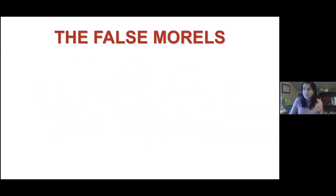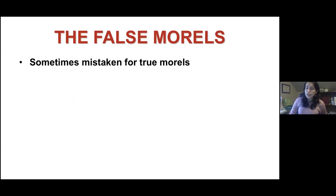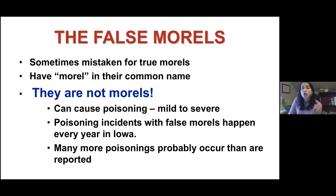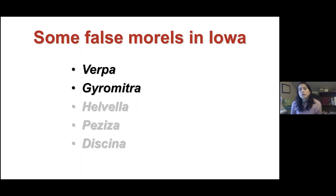Now we move into learning about false morels. Unfortunately, false morels are sometimes mistaken for true morels — their nicknames are very similar, but they are not morels. False morels can cause poisoning ranging from mild to severe. Poisoning incidents with false morels happen every year in Iowa, and it's likely that more poisonings occur than are actually reported. I'll focus on Verpa species and a couple of Gyromitra species.